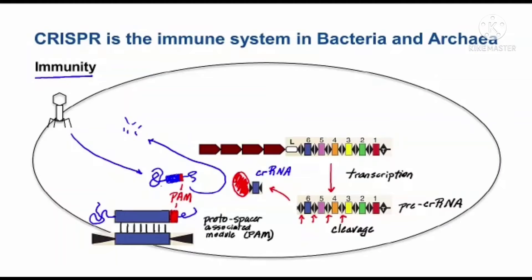On the other hand, the CRISPR array itself lacks PAM sequences. As a result, the system doesn't digest itself, preventing autoimmunity.